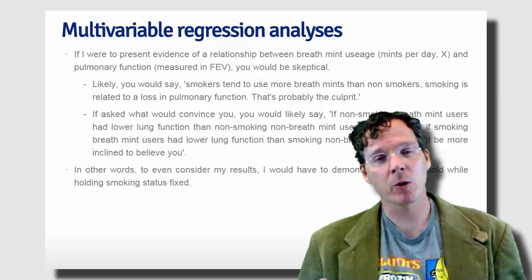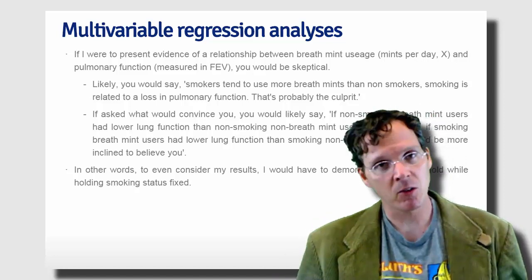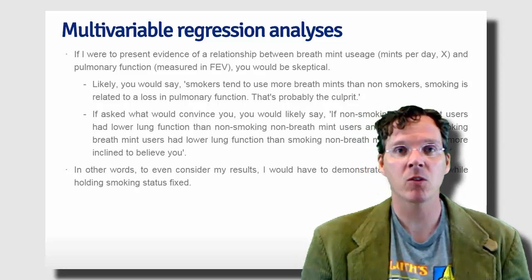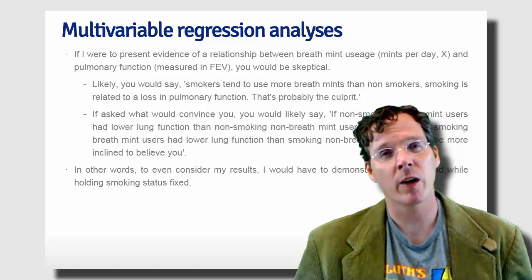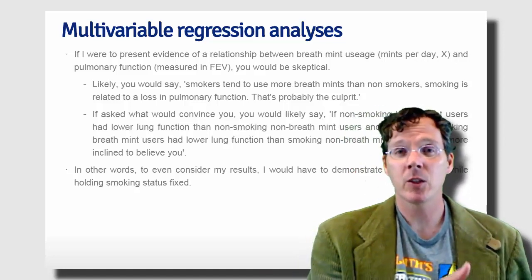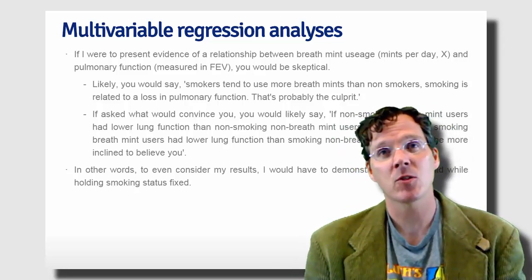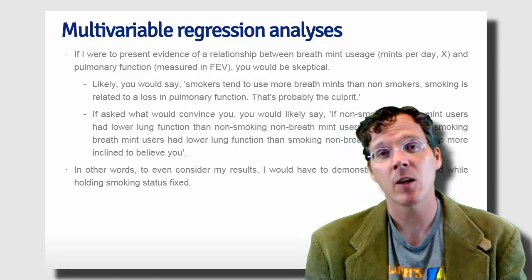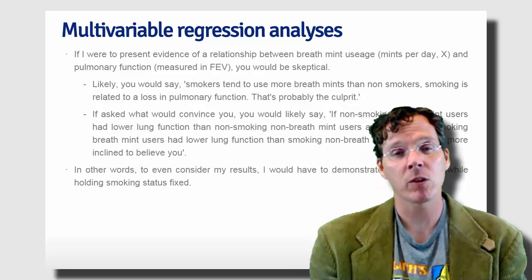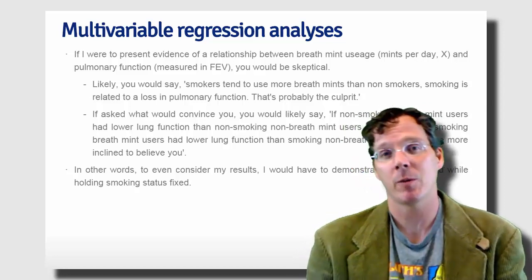Multivariable regression is sort of an automated way to do that in a linear fashion. It makes assumptions, but it does that sort of in an automated way. We'll explain in this lecture how it tries to hold smoking status constant while looking at breath mint usage and how it adjusts. We'll also talk a little bit about its limitations. The fundamental idea of multivariable regression is to look at the relationship of a predictor and a response while having, at some level, accounted for other variables.